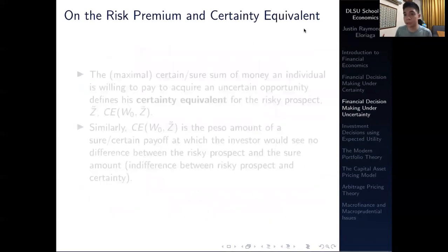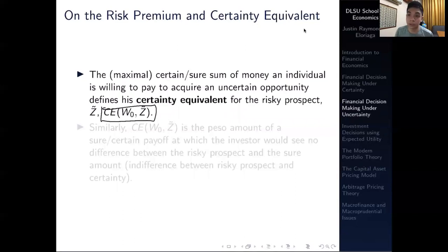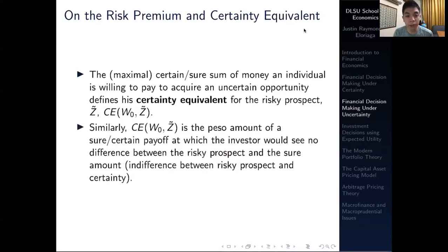The maximal — or certain — sure amount of money an individual is willing to pay to acquire an uncertain opportunity defines what we refer to as the certainty equivalent of the risky prospect, which we denote CE(W naught, Z-tilde). The certainty equivalent is the sure or certain payoff at which an investor would see no difference between the risky prospect and the sure amount.